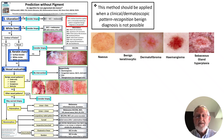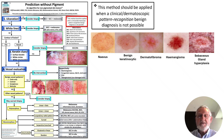The first three — nevus, benign keratinocytic and dermatofibroma — are commonly pigmented but may not be. The other two — hemangioma and sebaceous gland hypoplasia — are not ever pigmented by melanin but may masquerade as pigmented lesions. The majority of lesions in clinical practice will be in one of these five categories and you don't need to put them through an algorithm.